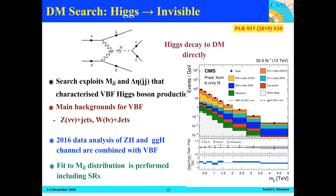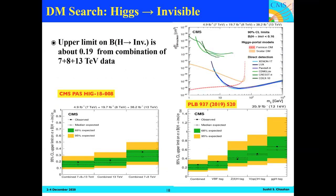In the Higgs invisible decay, H goes directly to DM particles. The search exploits the energy of VBF jets, applying a delta-eta separation between them, and fits the energy distribution including the signal regions. The upper limit is calculated on the branching ratio of Higgs to invisible. From the combination of all three years of data — 7 plus 8 plus 13 TeV — the result is found to be 0.19. Results are also plotted in terms of the dark matter nucleon cross section versus chi mass for two different models.